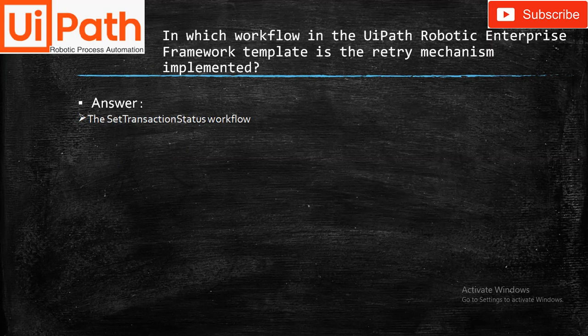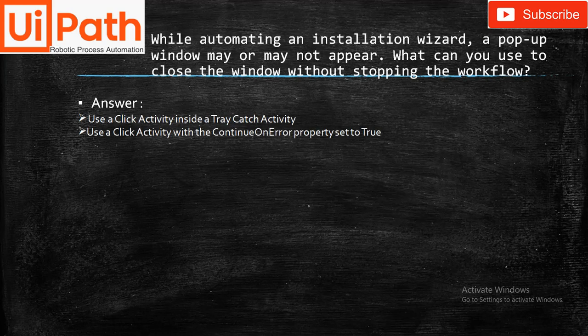In which workflow in the UiPath Robotic Enterprise Framework template is the retry mechanism implemented? Answer: The Set Transaction Status workflow. While automating an installation wizard, a pop-up window may or may not appear — what can be used to close the window without stopping the workflow?